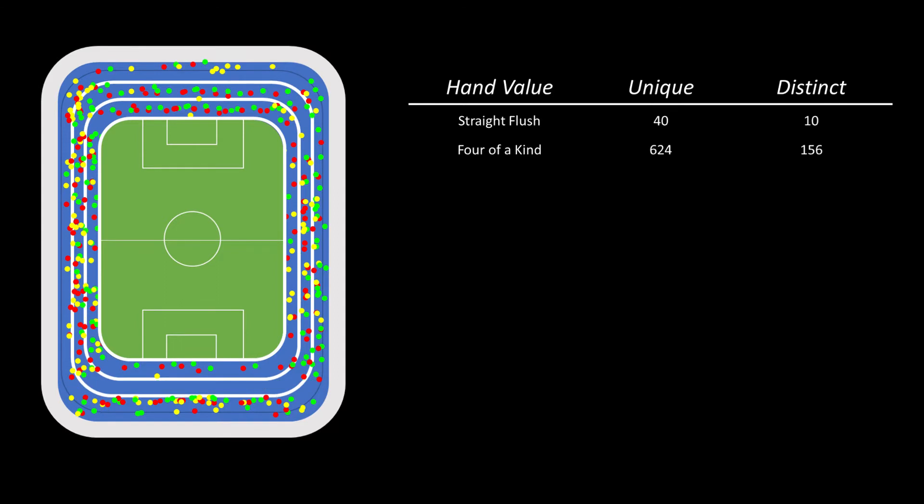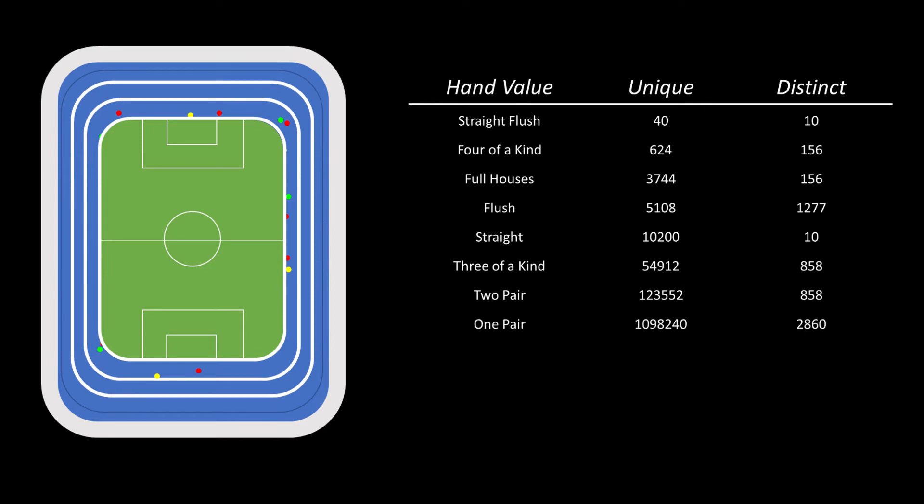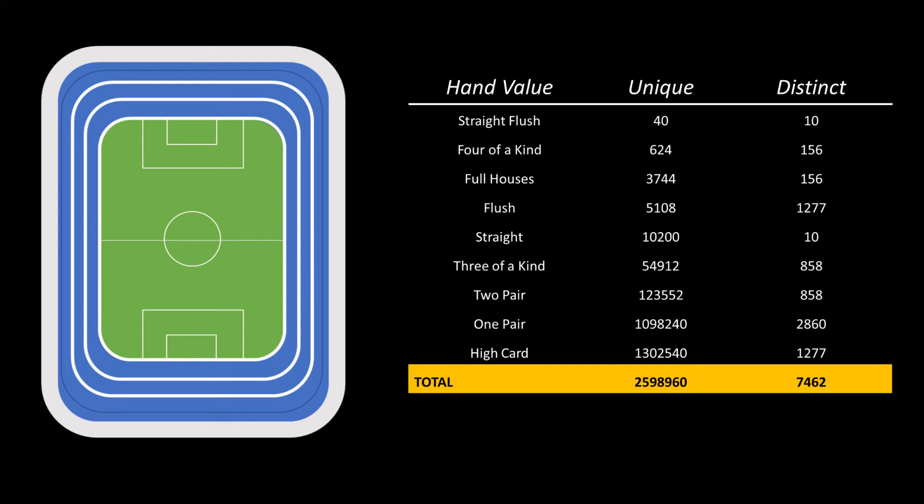If we do this for all the other hand combinations and distinguish between the unique and distinct groups, four of a kind drops from 624 to 156, straights get whittled down from over 10,000 to just 10, and so on. When it's all done, the stadium is empty and we end up with a very manageable 7,462 distinct hand combinations.